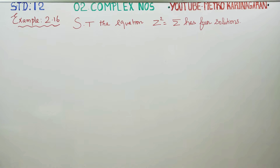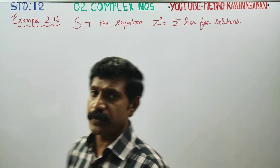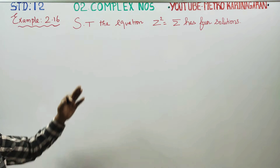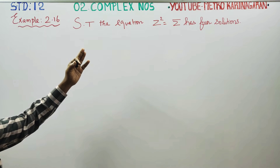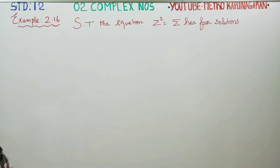Dear 12th standard students, I am Metru Karanagaran. In complex numbers, example 2.16, you have to show that this equation Z² = Z̄ has four solutions.